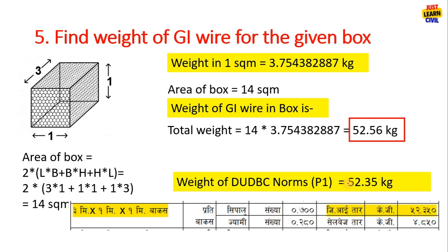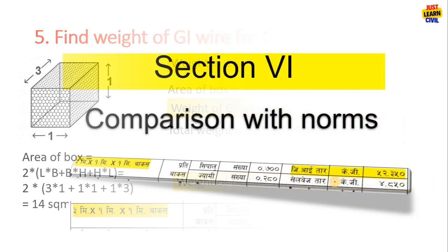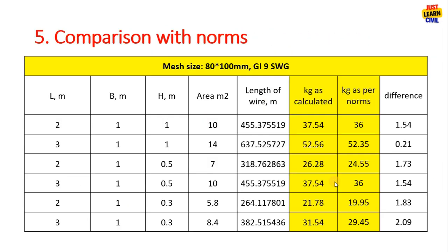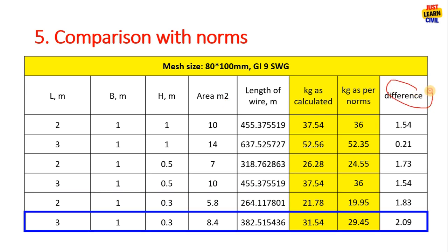Now compare it with the norm which is 52.35 and by calculation we got 52.56 which is very near. Compare it to other norms for different sizes of the box. We have this kg as per the norms and this as calculated. You can see the difference.